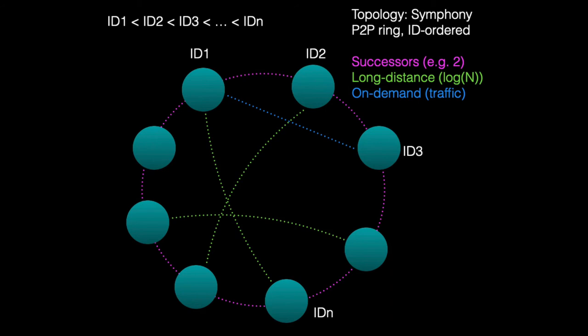Typically, a node has a constant number of successors — one or two — and log-n long-distance links (shown in green in the figure), where n is the network size. Furthermore, nodes create on-demand links (shown in blue) that respond to traffic demands.